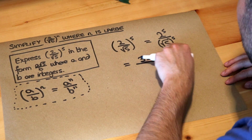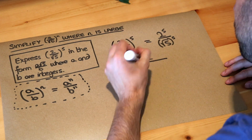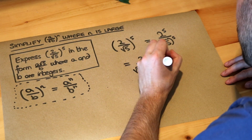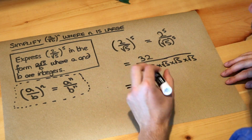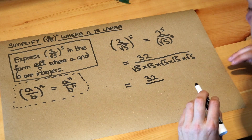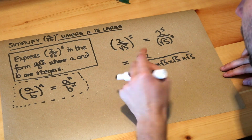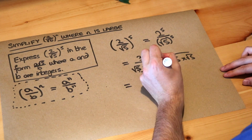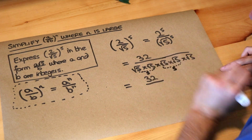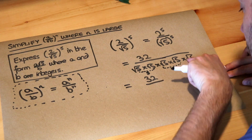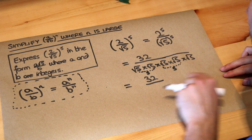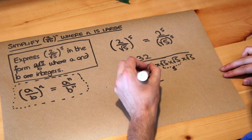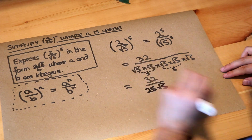For the denominator, we've got root 5 to the power of 5, which means root 5 written five times. Root 5 times root 5 is just 5, because any surd times itself gets rid of the square root. That pairs up twice, giving 5 times 5, with one remaining root 5 that doesn't pair up. 5 times 5 is 25, and 25 times root 5 is 25 root 5. So the denominator is 25 root 5.